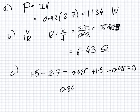0.84r will equal 0.3. So, the internal resistance is 0.3 over 0.84, which equals 0.357 ohms.